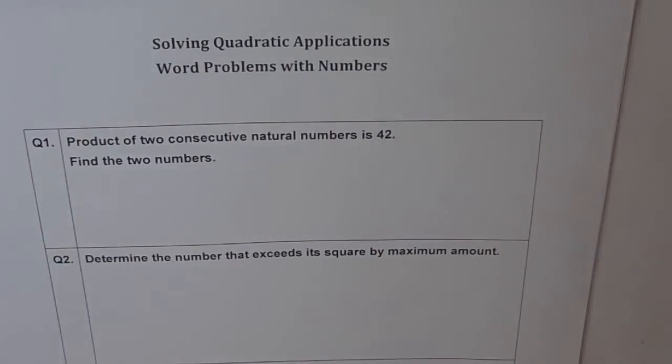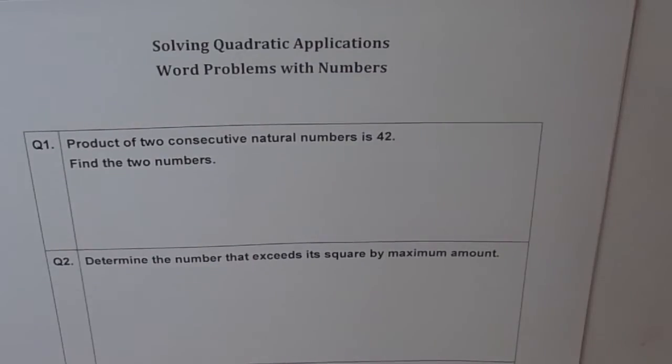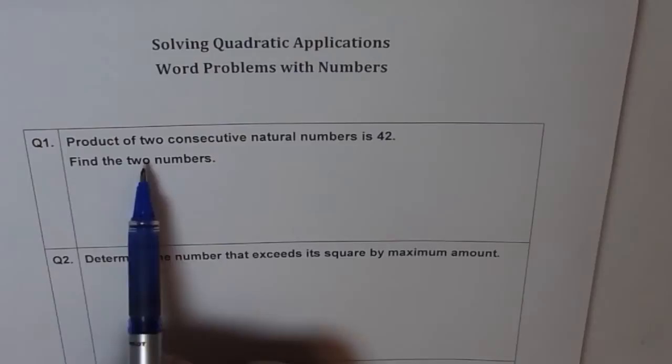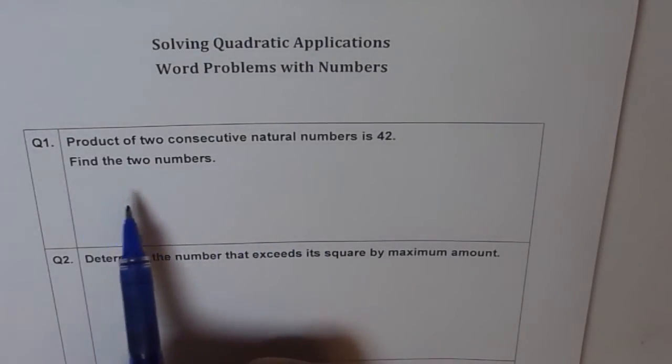Let's solve some quadratic applications with numbers. These are word problems where we have to deal with numbers and find out the solution. Let's see how it goes. Question number 1. Product of two consecutive natural numbers is 42. Find the two numbers.